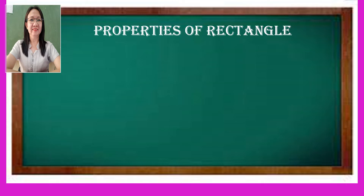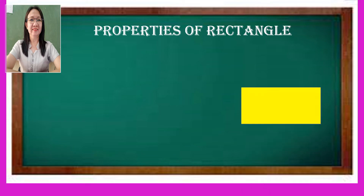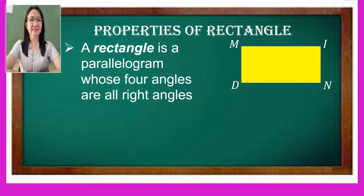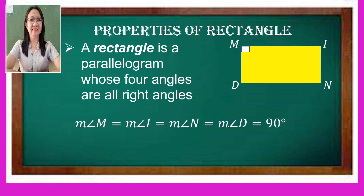Let me start with the properties of rectangle. All the properties of parallelogram can be observed in rectangle, but it has its own special feature. Let us name our rectangle M-I-N-D. A rectangle is a parallelogram whose four angles are all right angles. Using the figure, we can show that the measure of angle M is equal to the measure of angle I, and is equal to angle N, and also equal to angle D. They all have 90 degrees as their measure.